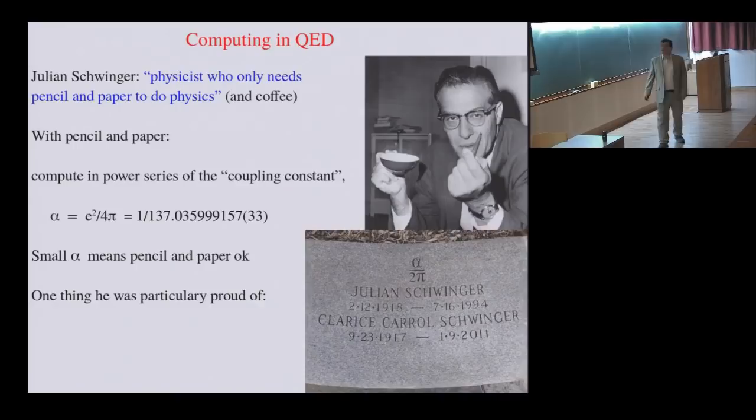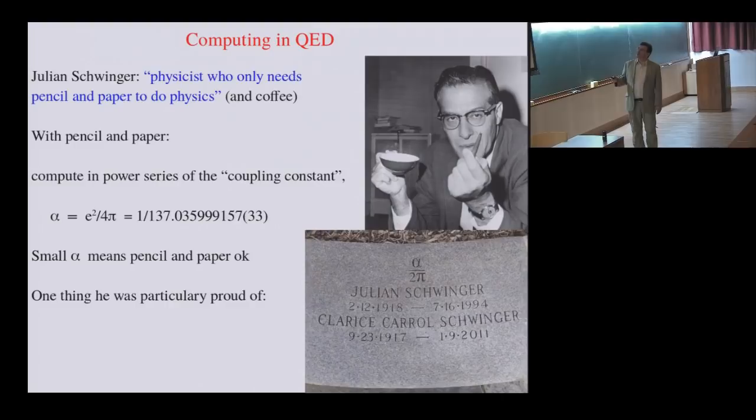This is a picture of Julian Schwinger. This is a picture from Physics Today. And the quote was, this is a physicist who only needs pencil and paper to do physics. Notice that he also needs coffee, of course. But the point is, he only needs pencil and paper because the relevant parameter that controls how strong these interactions are is a very small number. It's about 1 over 137. So because this number, this coupling constant, is very small, it means you only need pencil and paper. And one thing he was particularly proud of is the following. This is in fact his tombstone. He passed away before his wife, but I assume he had given instructions to his wife. And all it says, it doesn't mention the Nobel Prize, nothing else. It just mentions alpha over 2 pi.